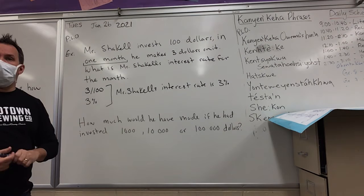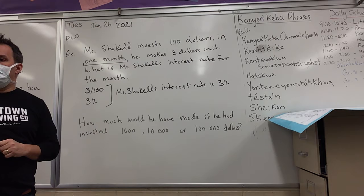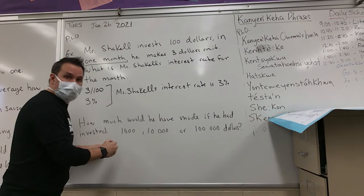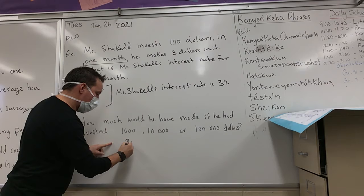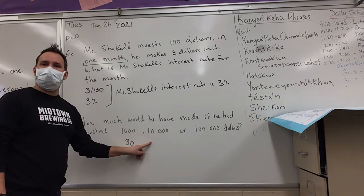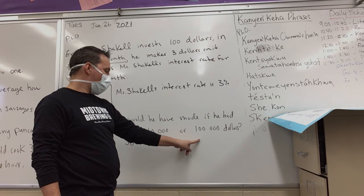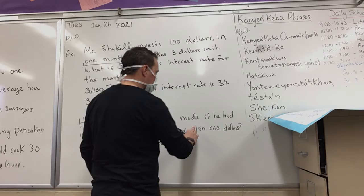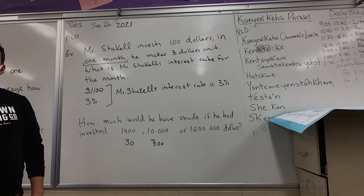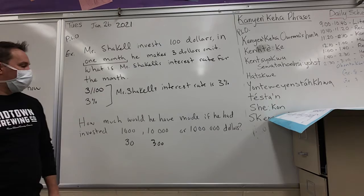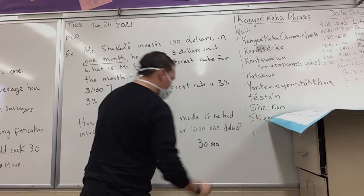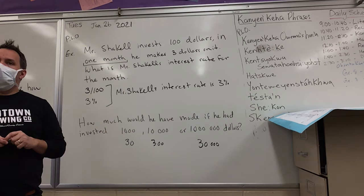What about if instead of a hundred dollars, he invested a thousand dollars? How much does Mr. Shakel make? So if you add a zero, he'll make thirty dollars. And if he invests a million dollars, he'd make thirty thousand dollars on a million dollars.